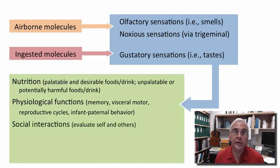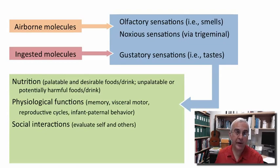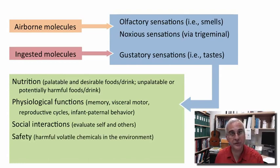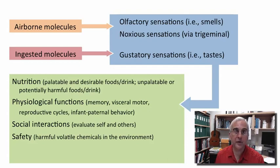There are a variety of social interactions that are mediated via the chemical senses. Through the chemical senses, we evaluate self and we evaluate others. Safety also becomes an important domain of chemical sensation — not just for the ingestion of potentially harmful substances, but also our interaction with volatile chemicals in the environment that might be mildly irritating at low concentrations and potentially quite harmful at higher concentrations.